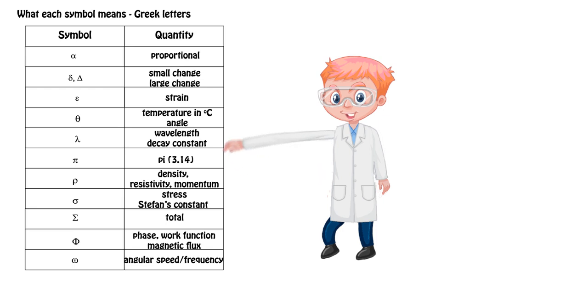Finally we've got the Greek letters alpha delta—remember small delta small change, large delta large change—epsilon, which we also use for EMF in some cases but not always on the WJC. Theta normally angles but we can also use it for temperature in degrees Celsius. Lambda we generally use for wavelengths but can also be decay constant if we're dealing with radioactivity. Rho is probably the most confusing and it's vital you know the context here especially as density and momentum have very similar formulas.